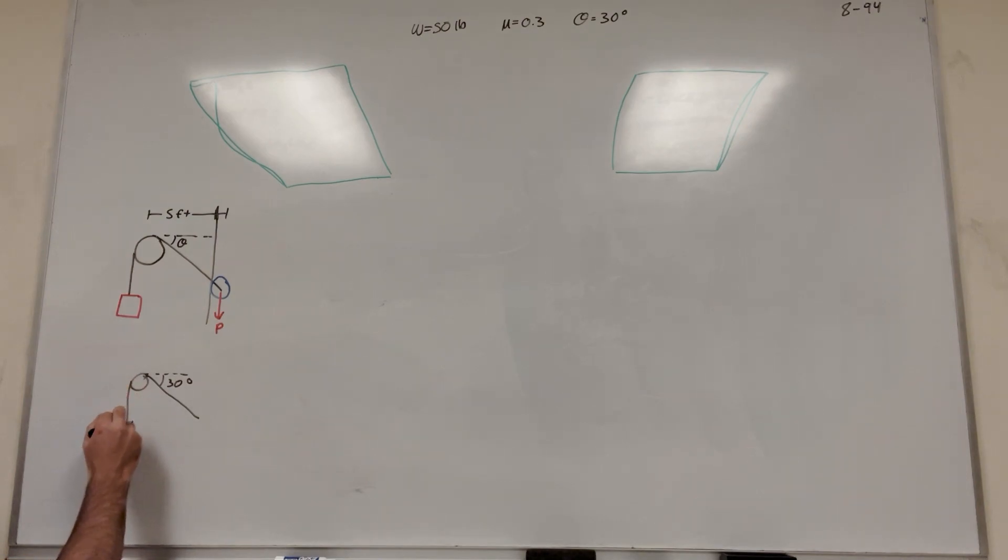And then we have our weight here. So this is W, which is 50 pounds. And then here we have P, a force acting down. This is P.